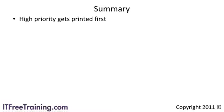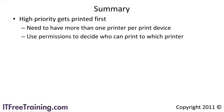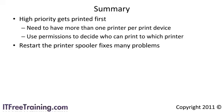In summary, remember that high-priority printers get their jobs printed first, but priorities only work if you have more than one printer per print device. Once you set up your printers, use permissions to determine who can print to which printer. When troubleshooting printer problems, a lot of issues can be solved by simply restarting the printer spooler, which often frees up stuck jobs. Understanding printing is fundamental — it is often the first service end users complain about when it stops working.